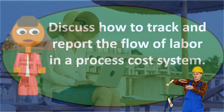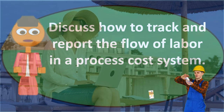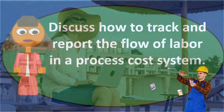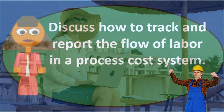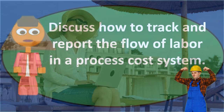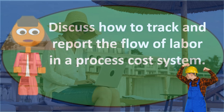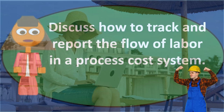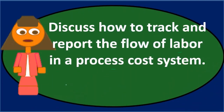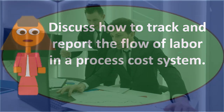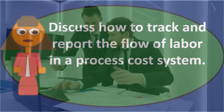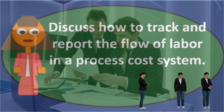Once a process is completed, the costs move forward. If there are multiple work in process accounts, costs flow out of one work in process into the next work in process. Then, at some point, they flow out of work in process altogether and go into finished goods.